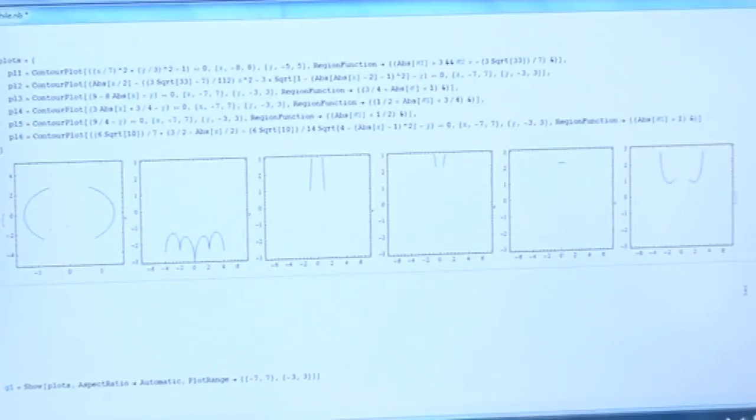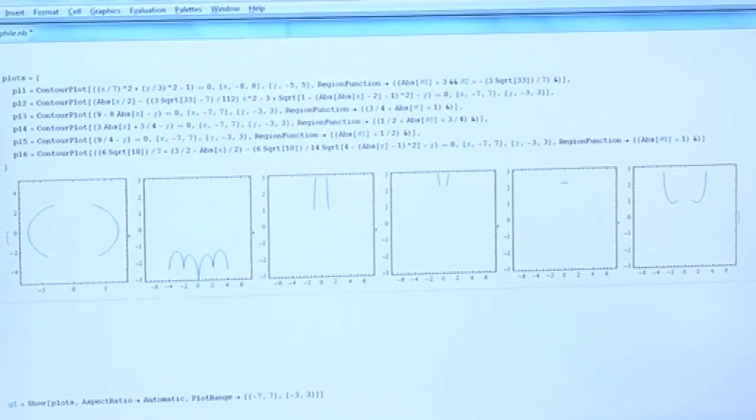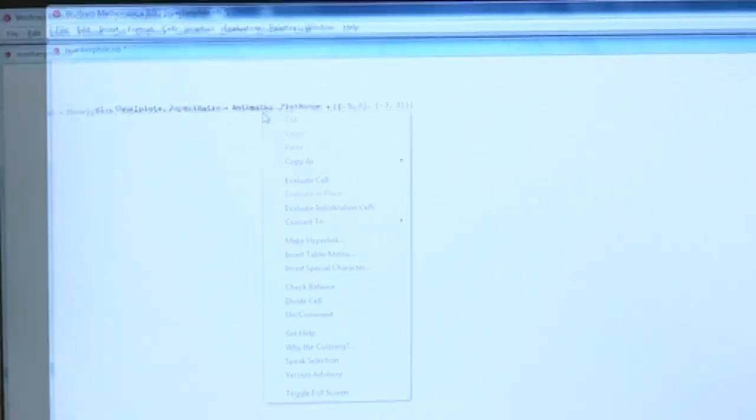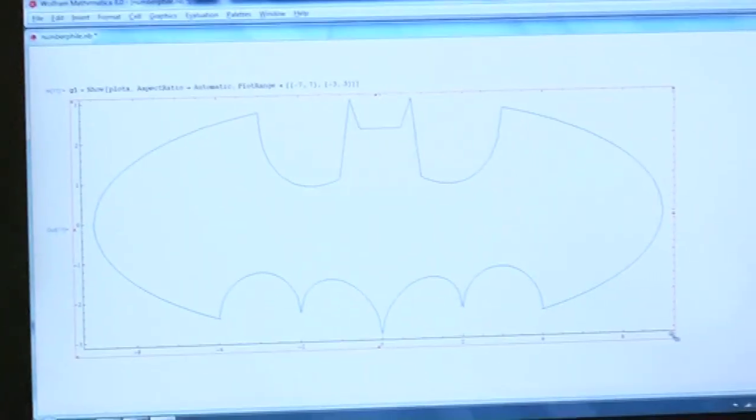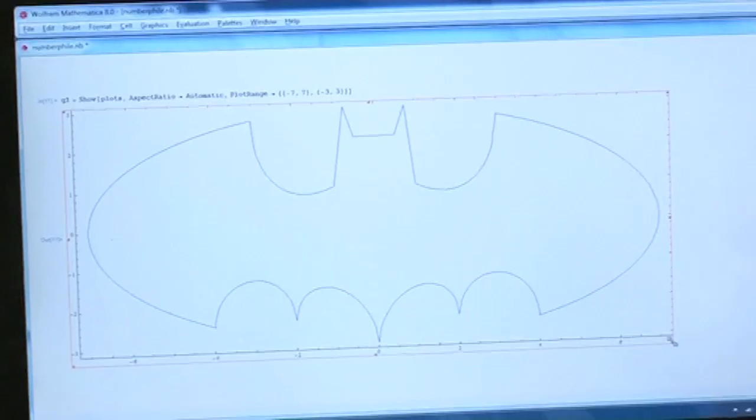You put those together by multiplying. He multiplied these equations together. What do you get? The Batman curve. It went viral last year, but I wanted to do it because I'm very much looking forward to the Dark Knight Rises coming out.